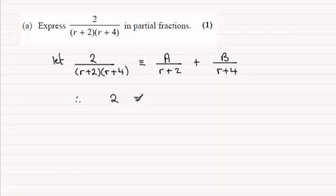2 here being identical to a times (r+4) plus b times (r+2). And all we've got to do now is just select various values of r, and the best ones to do is make this bracket 0.